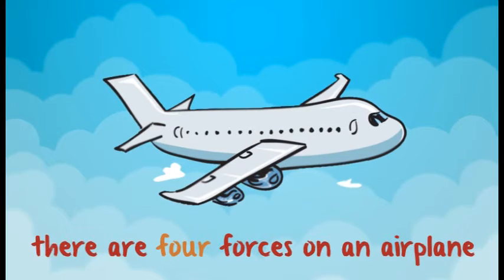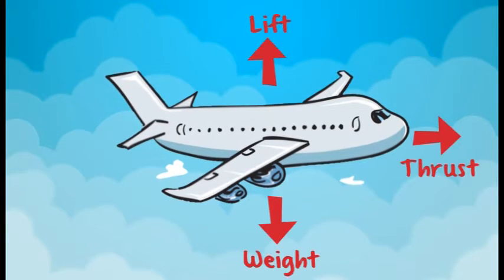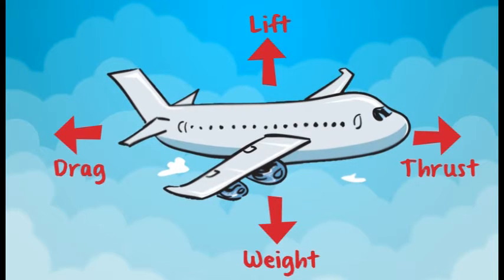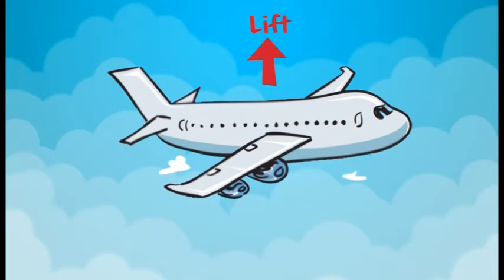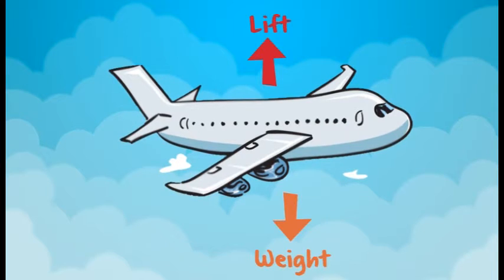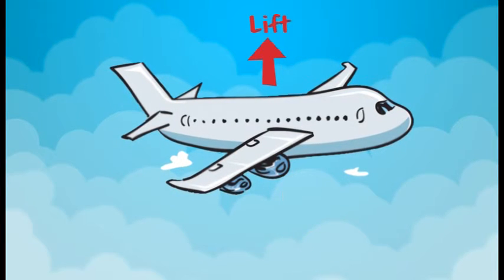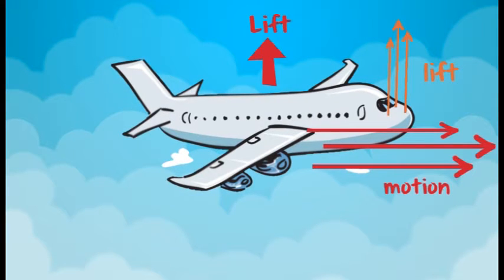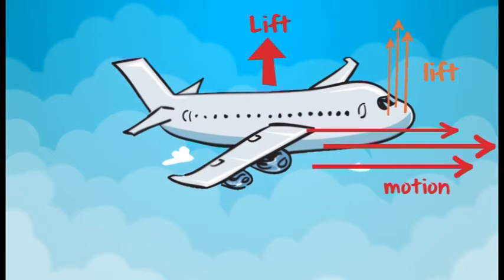There are four forces on an airplane: lift, weight, thrust, and drag. Lift forces oppose the downward force of weight. Lift is generated by the motion of the airplane through the air, and it is an aerodynamic force.